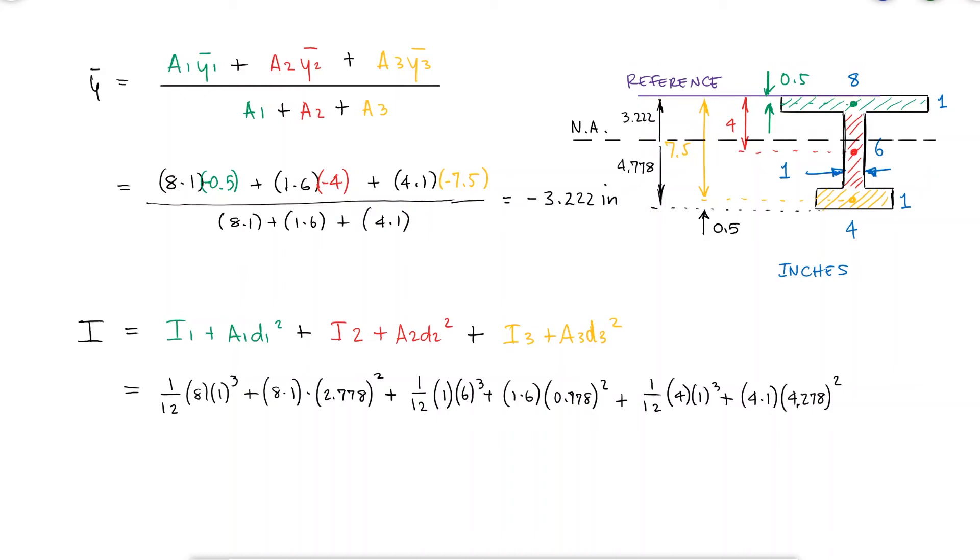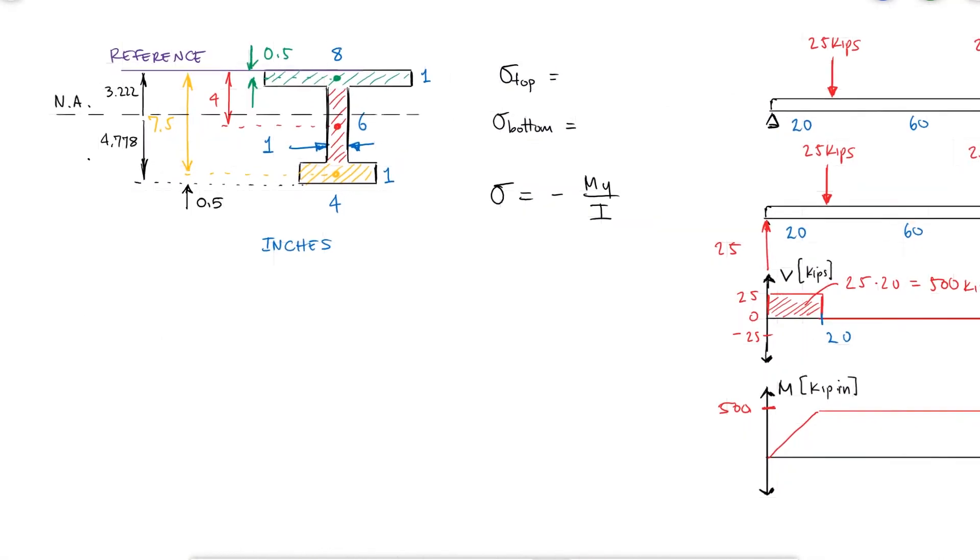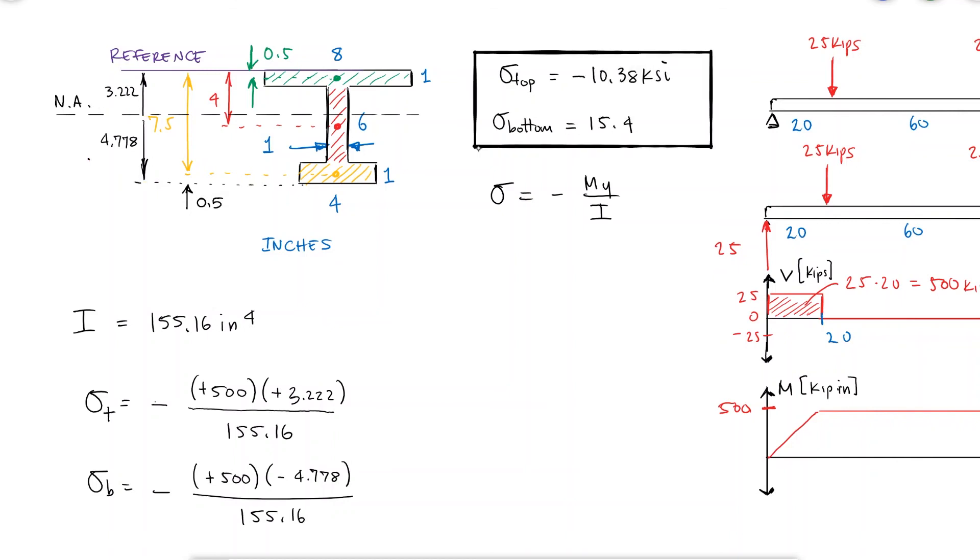This yields a second moment of area of 155.16 inches to the fourth. The normal stress due to bending at the top of the beam will therefore use a wide distance of positive 3.222 and the normal stress due to bending in the bottom of the beam will use a distance of minus 4.778, which means that the top is under compression and the bottom is under tension.